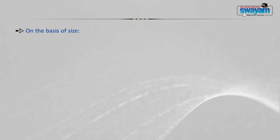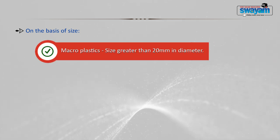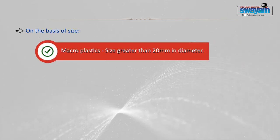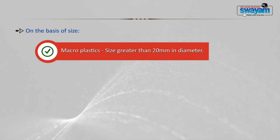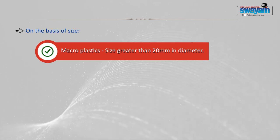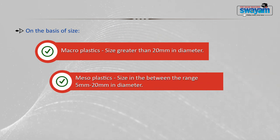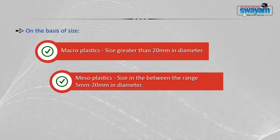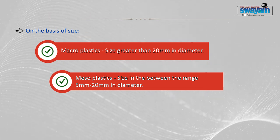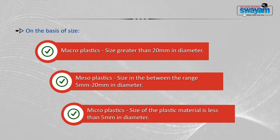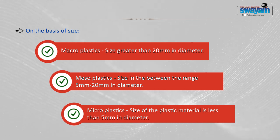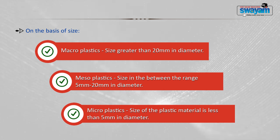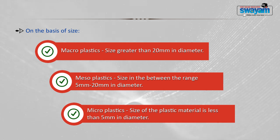Based on size, plastics are classified into three types. Macroplastics have a size greater than 20 mm in diameter. Mesoplastics have a size between 5 mm to 20 mm in diameter, and microplastics have a size less than 5 mm in diameter.